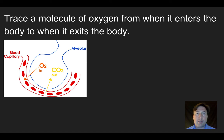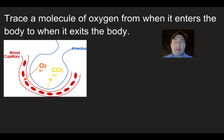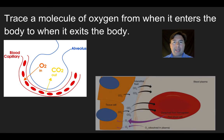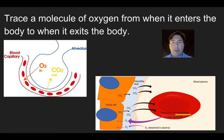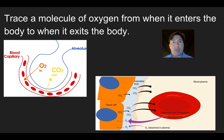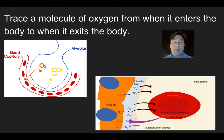Once oxygen diffuses into the bloodstream, red blood cells carrying hemoglobin — a protein with a high affinity for oxygen — bind to those oxygen molecules. The oxygen is then carried through the blood plasma throughout the entirety of the body. At the various tissues, there is a higher concentration of oxygen in the bloodstream and a lower concentration in the tissues, so oxygen detaches from hemoglobin and diffuses into the tissues. Cells need oxygen for cellular respiration, where they break down sugars and utilize oxygen.